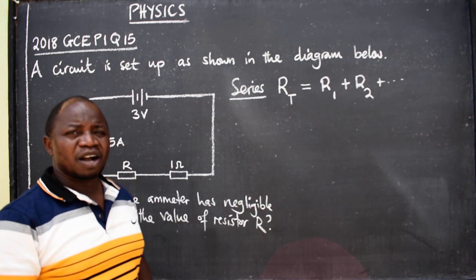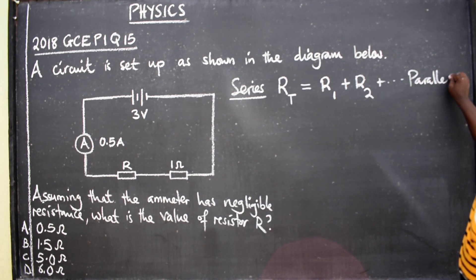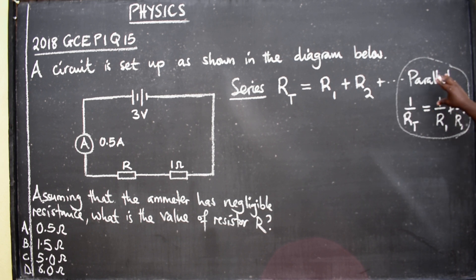But remember if they are connected in parallel we make sure that we use 1 over total resistance is equal to 1 over resistor 1 plus 1 over resistor 2. It goes on just like that. This is what you need to know if they are connected in parallel.